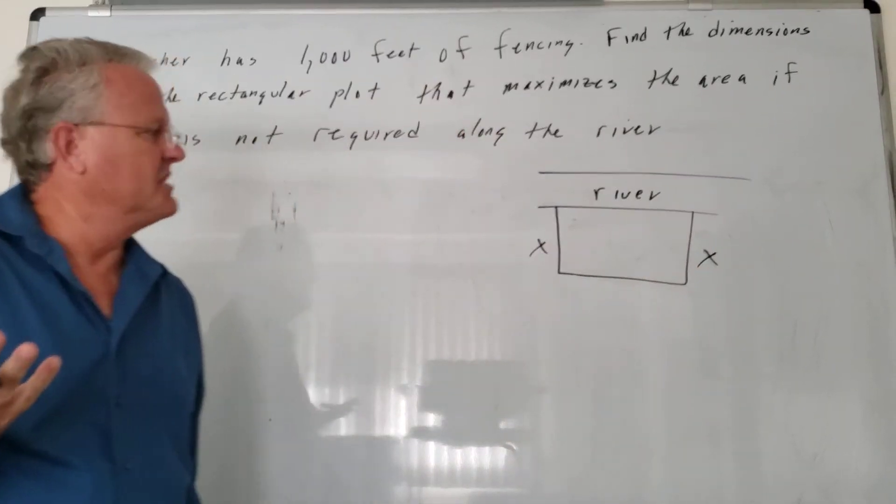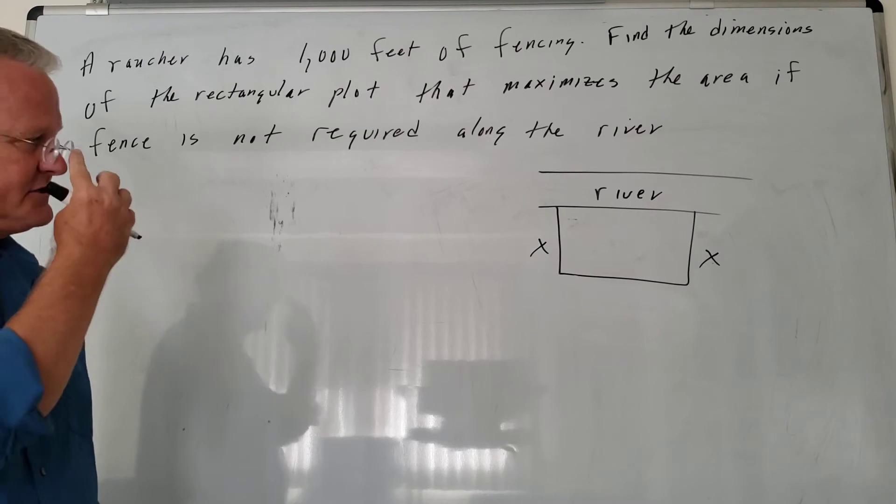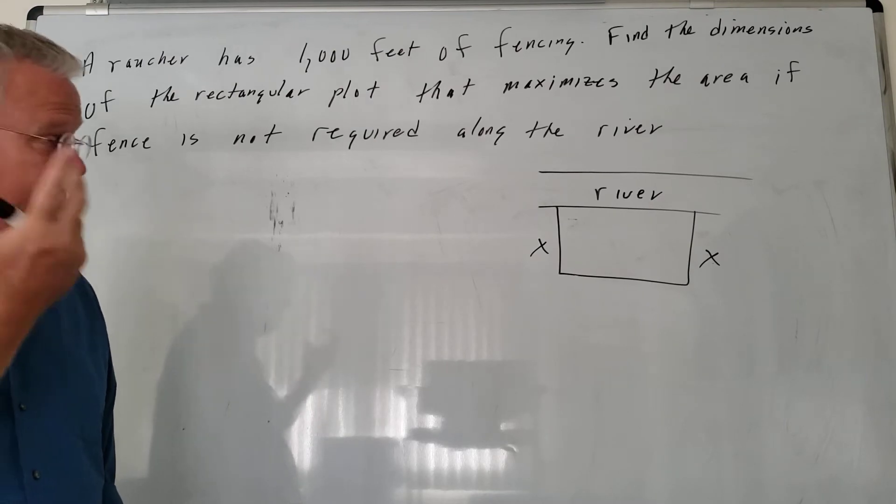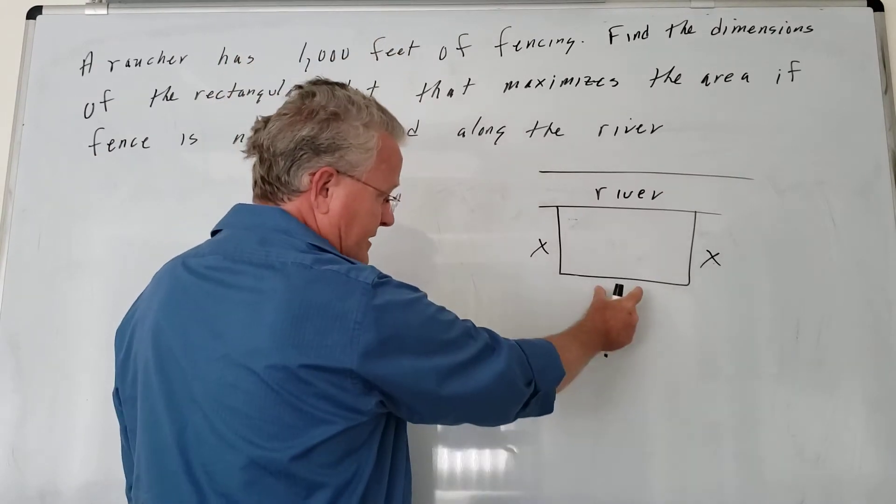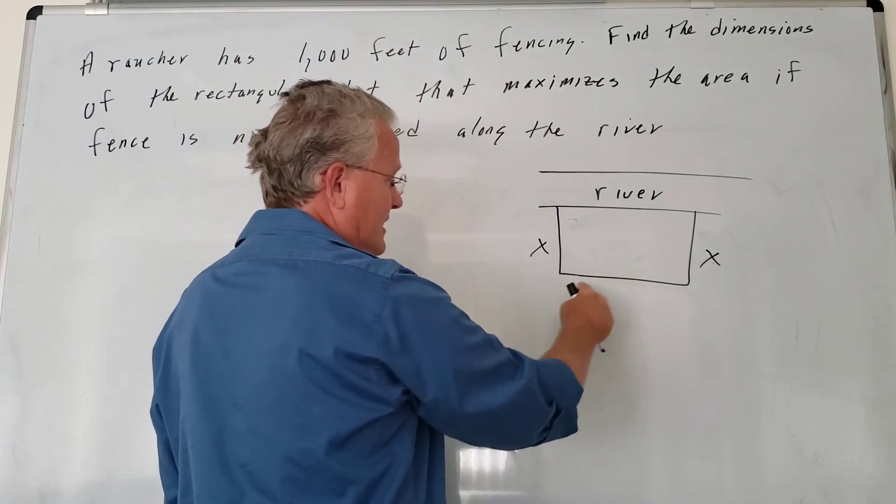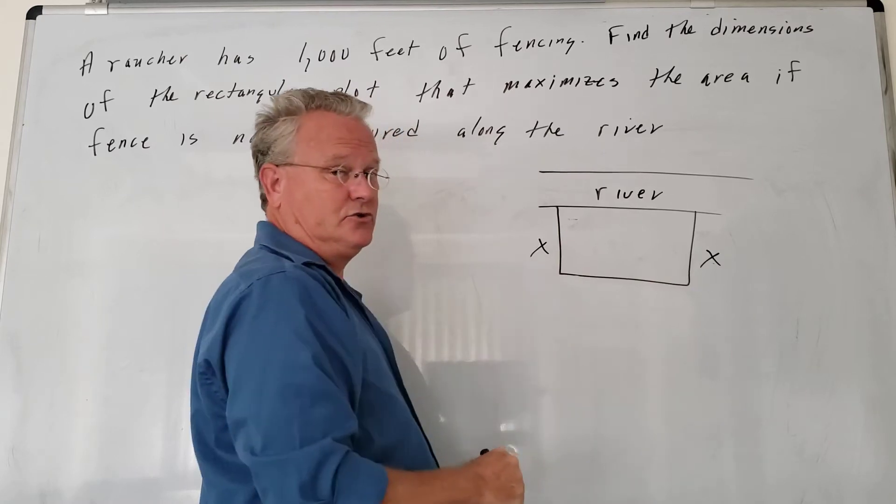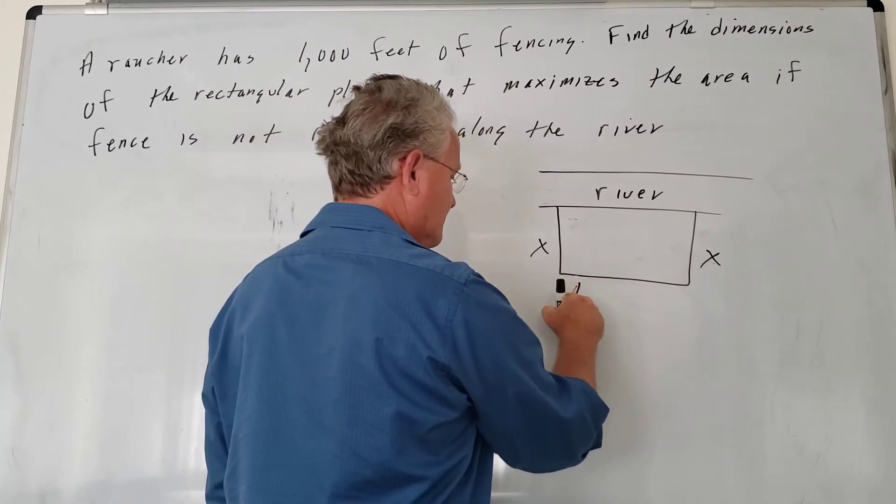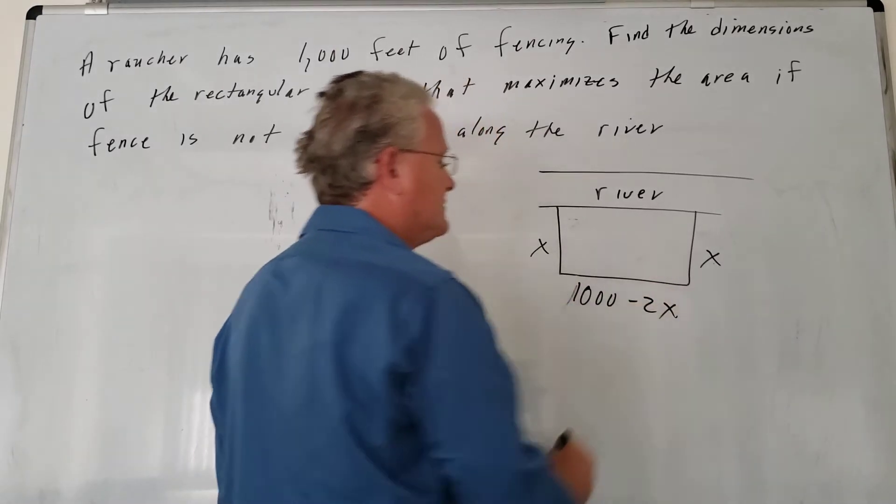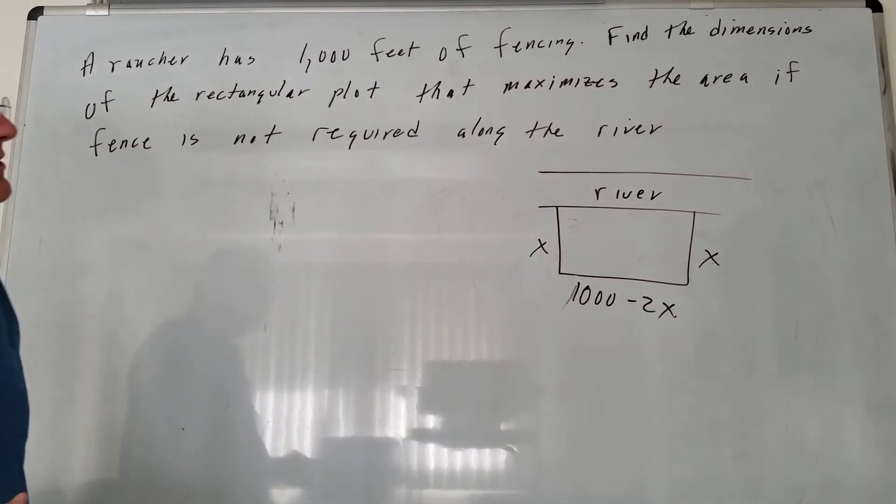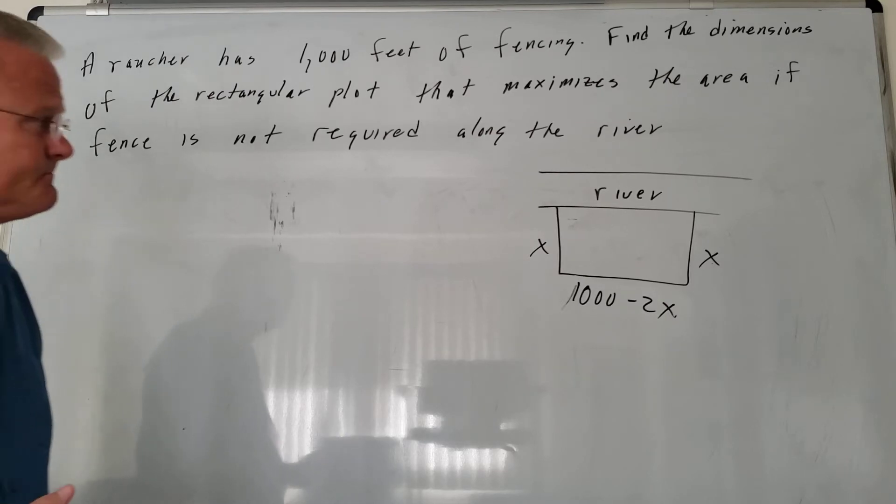Let's say the length or width of that side is X. If we have a total of 1,000 feet, then the remaining fence to put here is 1,000 minus these two sides, so 1,000 minus 2X. Those are the dimensions in terms of X.